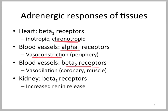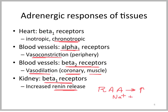On the other hand, peripheral vessels — including the coronary artery and muscle vasculature — will actually vasodilate, because the heart and muscle need to be perfused with substrate and oxygen during stress. In the kidney, beta-1 receptors can stimulate renin release, and if you remember the unit on mineralocorticoids, stimulation of the renin-angiotensin-aldosterone system leads to increased sodium and water retention, and angiotensin also has a very significant vasoconstricting role.